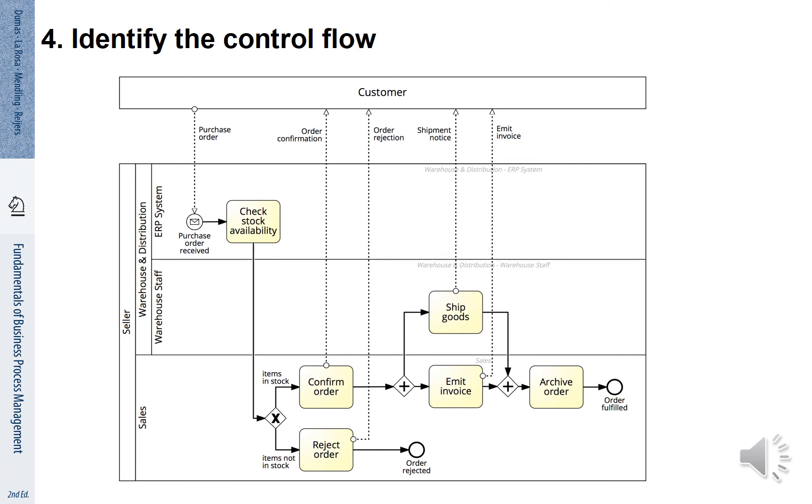Now we need to ask ourselves what is the actual control flow. You see here the picture where gateways and control flow arcs have been added. You see that the gateways represent that there is a choice to either confirm or reject the order. There is also an and split and an and join to represent that ship goods and emit invoice are being done in parallel.